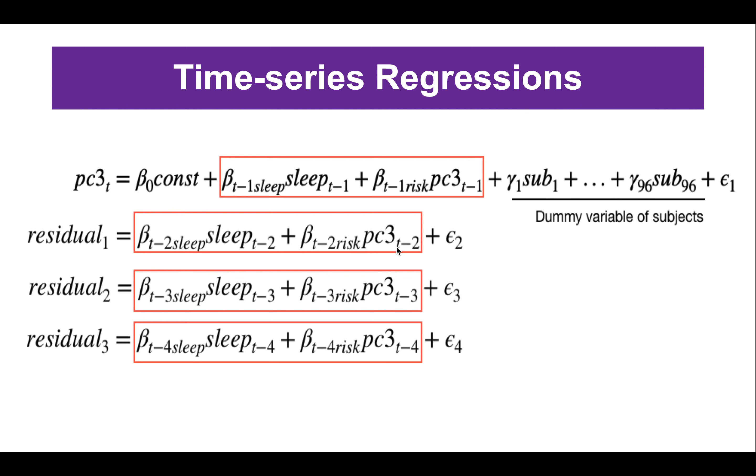In the second regression, we further examine how the residuals from the first regression can be explained by the two weeks ago variable. Following this logic, we can see the predictive power of the sleep time duration one week ago, two weeks ago, or even three to four weeks ago to the current week risk component.